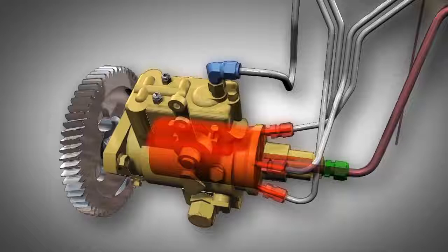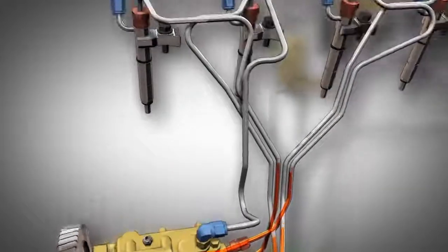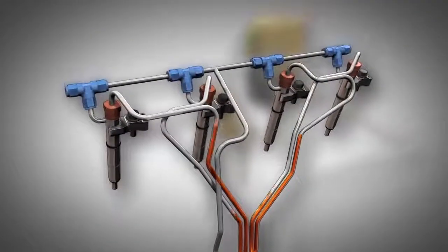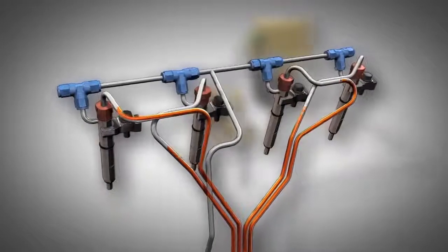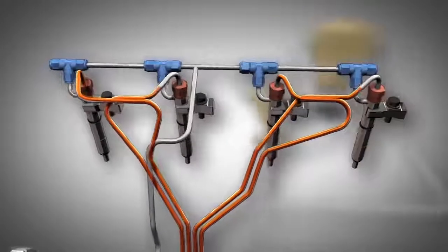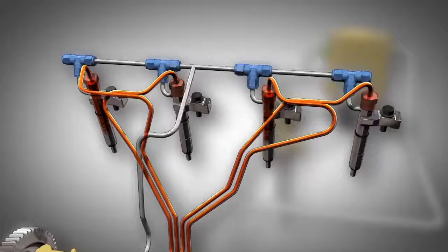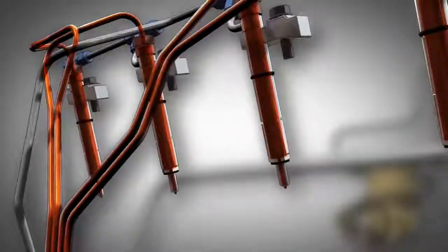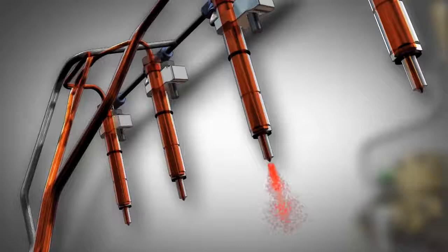Next, the injection pump plungers pressurize the fuel. Delivery pressure lines route the high-pressure fuel to the fuel injection nozzles. Fuel enters the injection nozzle at a pressure which easily overcomes the pressure required to open the nozzle valve.